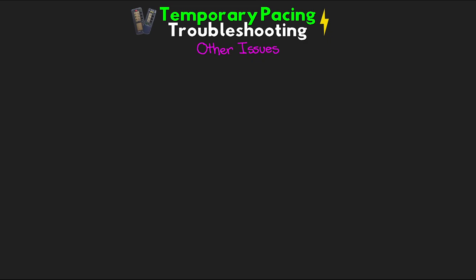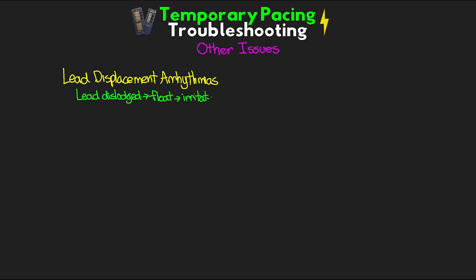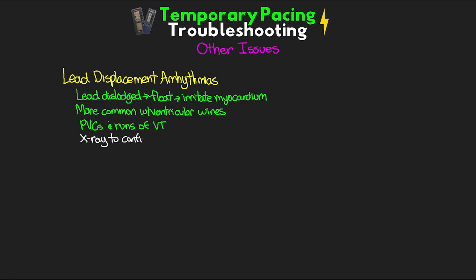Let's cover some other potential issues. Lead displacement arrhythmias: if a lead becomes dislodged, it can float inside the chamber and cause irritation of the myocardium. This is more commonly seen with ventricular wires and can lead to frequent PVCs and even runs of V-tach. Get an x-ray for confirmation, and if the arrhythmia is significant enough, the wire may need to be pulled back out of the ventricle until it can be properly placed.